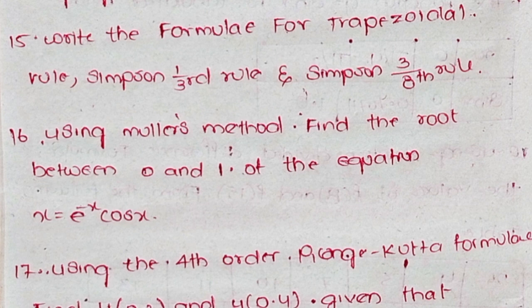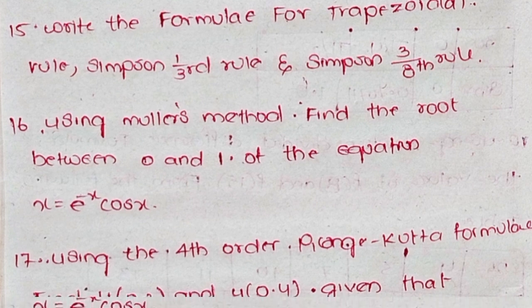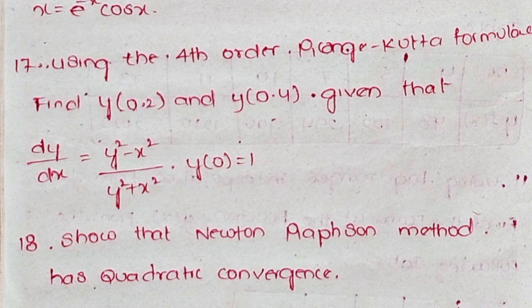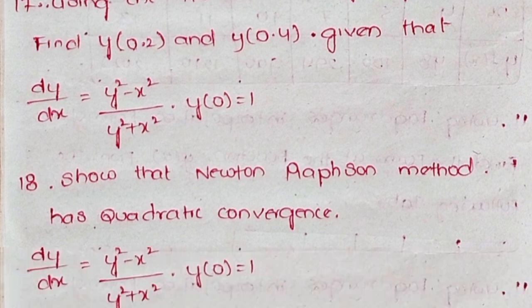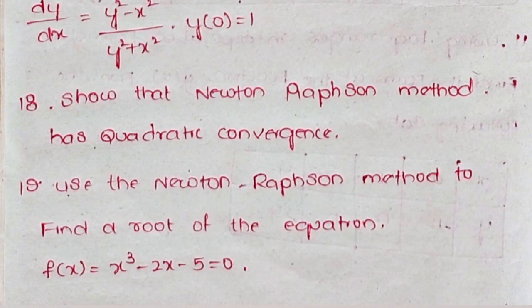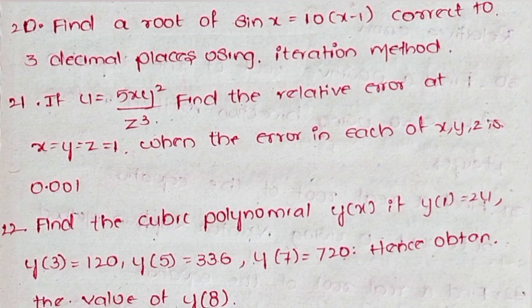Question 16: Using Muller's method, find the root between 0 and 1 of the equation x = e⁻ˣ cos(x). Question 17: Using the fourth order Ranga-Kutta formula, find y(0.2) and y(0.4) given that dy/dx = (y² - x²)/(y² + x²) with y(0) = 1. Question 18: Show that Newton-Raphson method has quadratic convergence. Question 19: Use the Newton-Raphson method to find the root of the equation f(x) = x³ - 2x - 5 = 0.